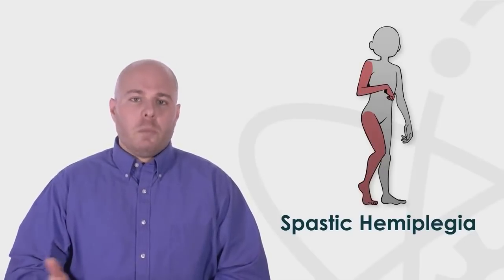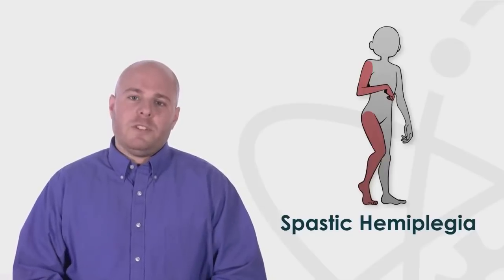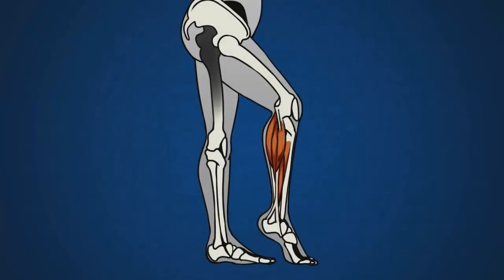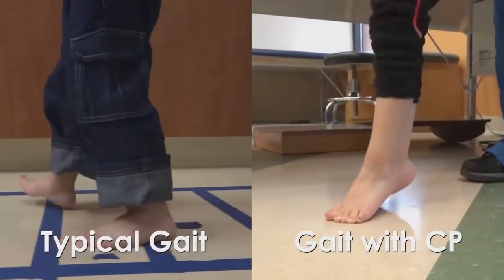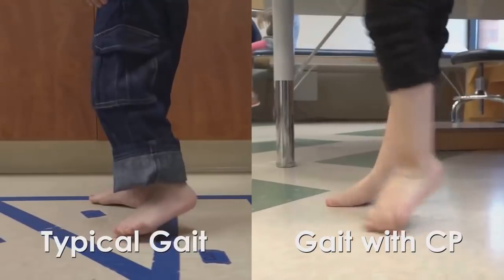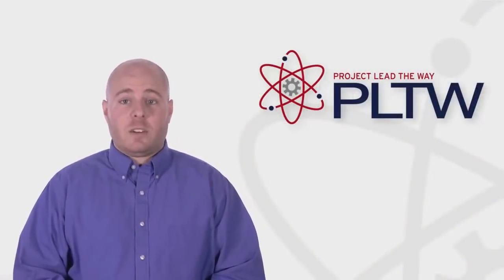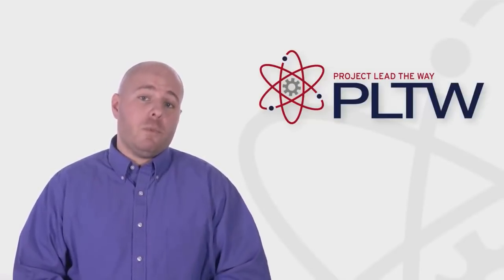Usually their arm is more affected than their leg. There are different kinds of spastic hemiplegia. In the case of your patients, the muscles in the back of their affected legs are tight and contracted. This causes an abnormal foot position and stance. Due to the contraction of these leg muscles, patients typically walk on their toes and therefore have an irregular walking pattern.